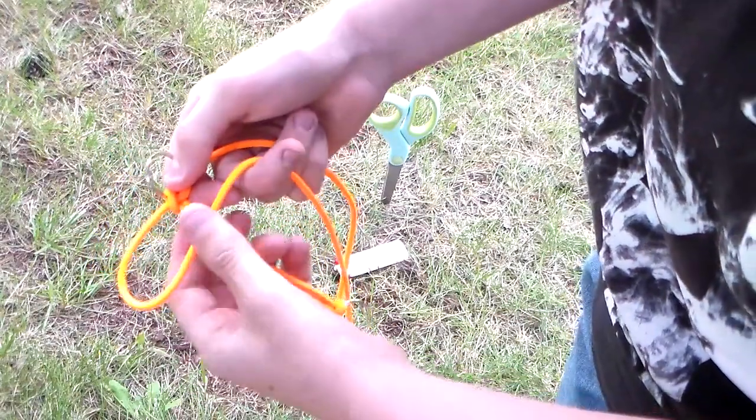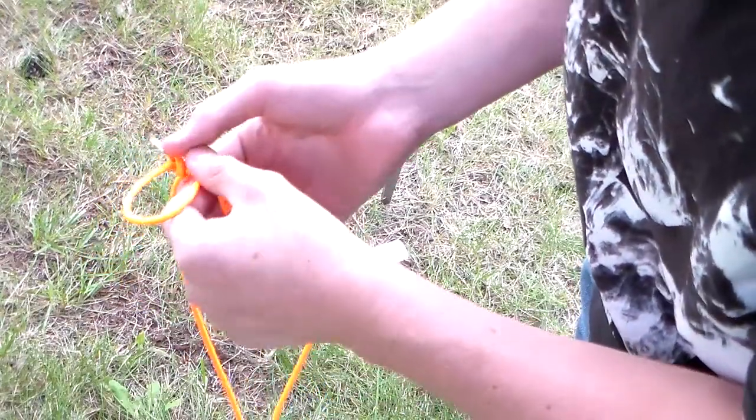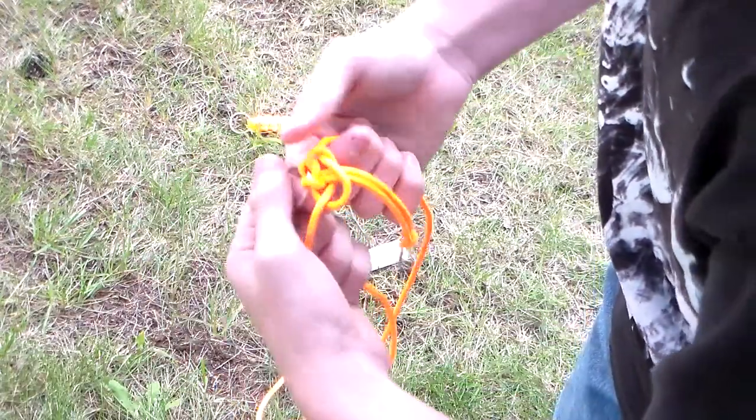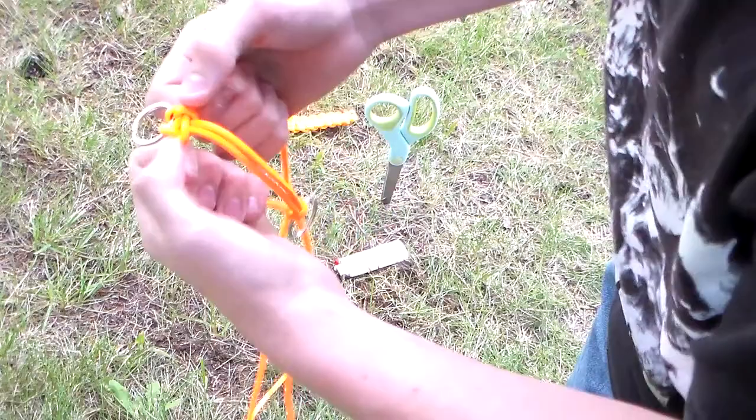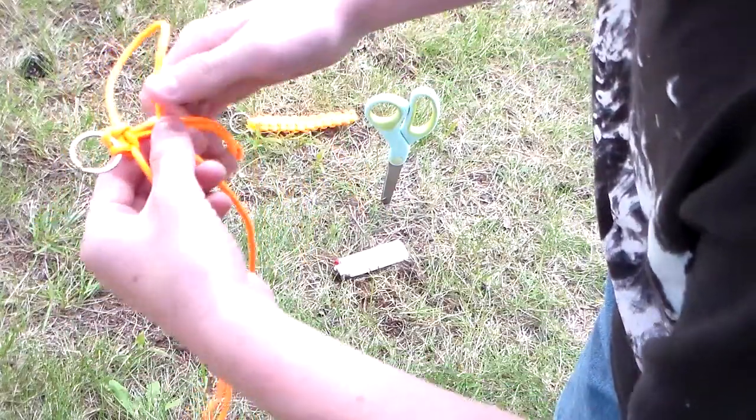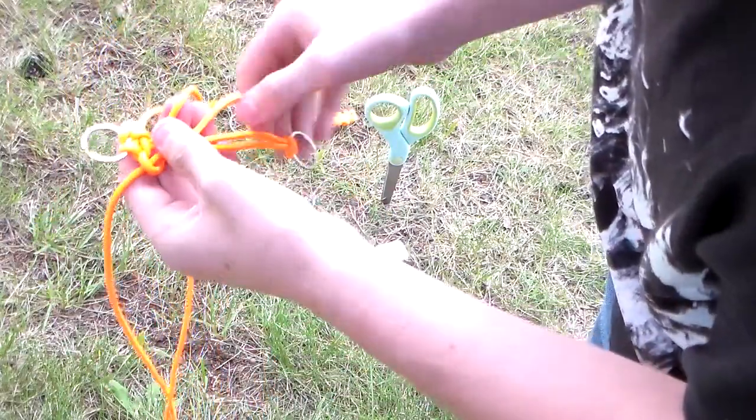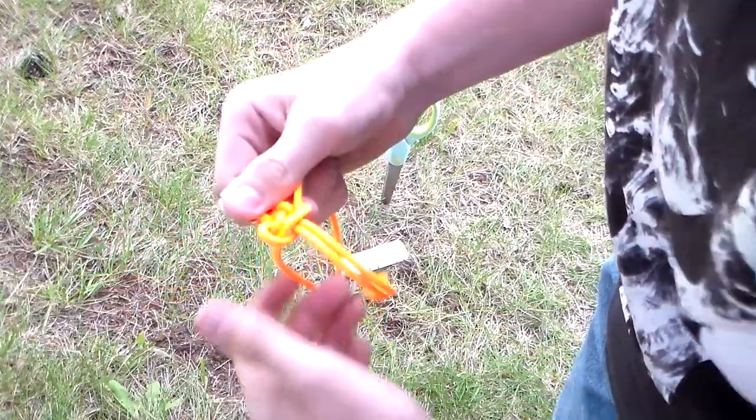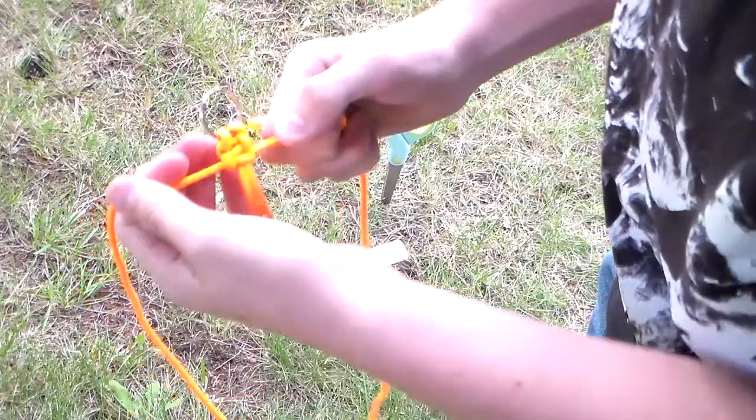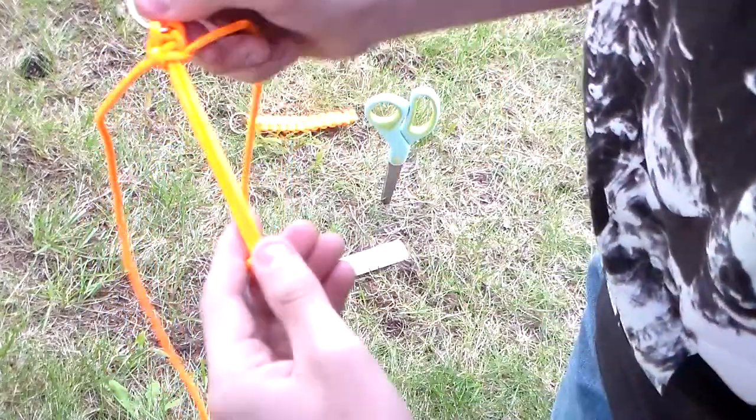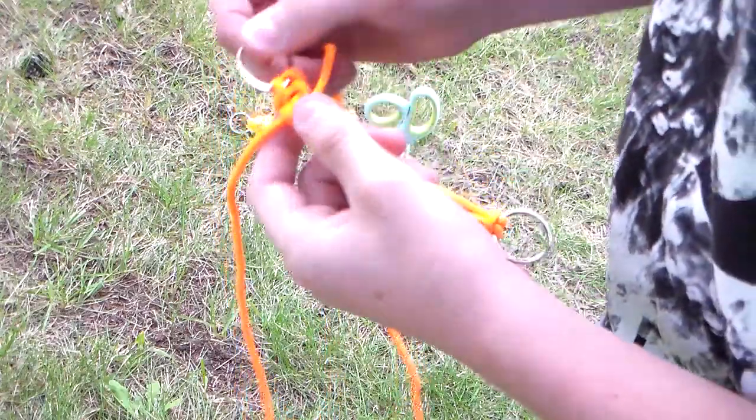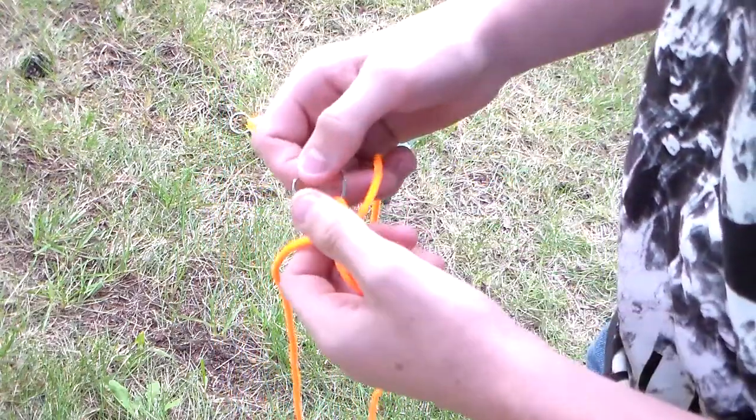So now you're going to take it again, make a loop, put it under, pull it through the loop. I'm going to show that to you one more time. I'm going to make a loop, put it under the tail, pull it through the loop, and then pull tight. And then you just do that, and I will show you what you get when you get down here. So hold on a second.